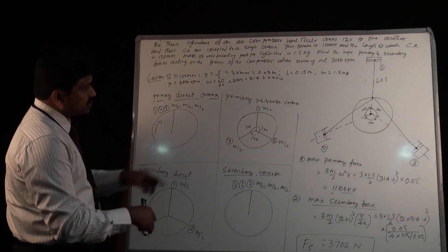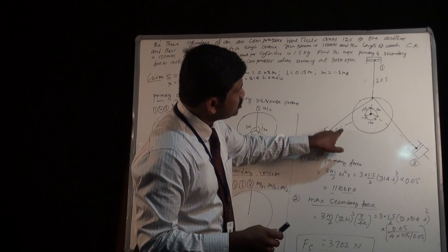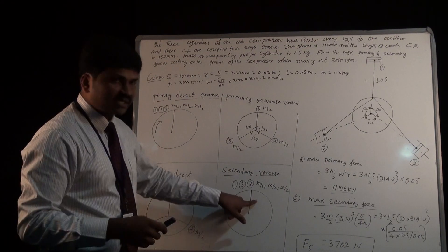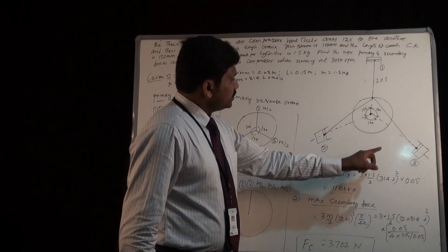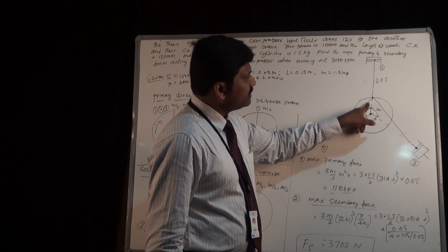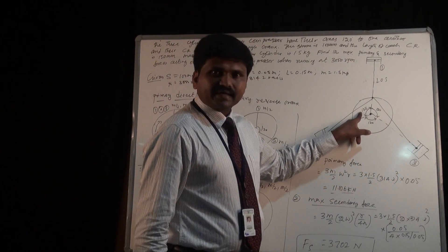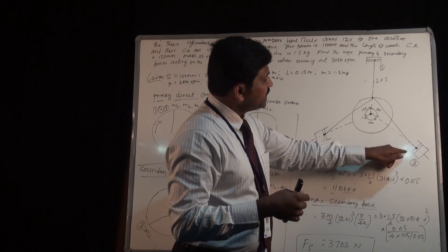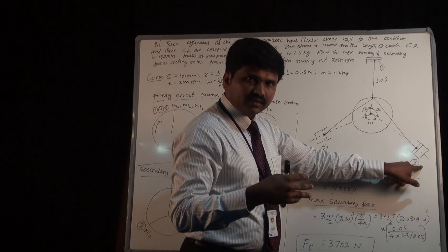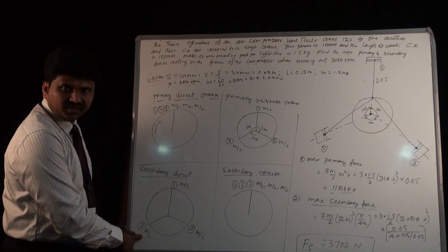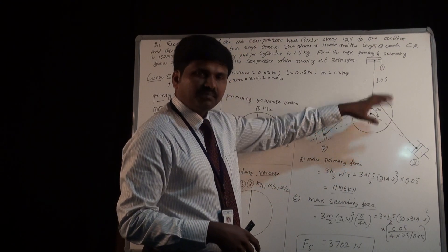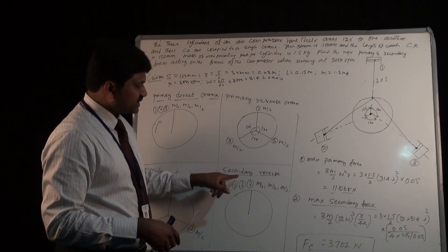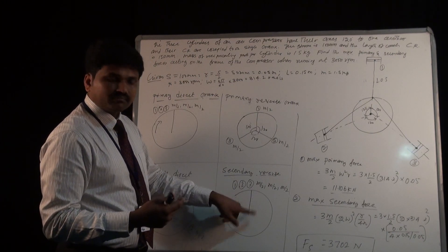For cylinder 3, if the direct crank comes to this position, measure 240 degrees in the clockwise direction — the secondary direct crank of cylinder 3 will come to this position. Then for the reverse crank, measure 240 degrees in the anticlockwise direction. For the secondary analysis, multiply the angle by 2: 240 times 2 equals 480 degrees; subtract 360 to get 120 degrees. So the secondary reverse crank of cylinder 3 comes to 120 degrees.